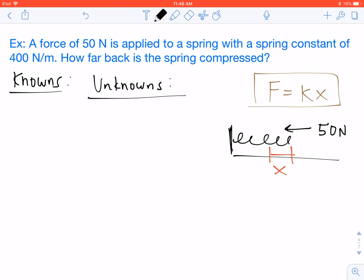In this video lesson, I'm going to teach you how to use the Hooke's Law equation. And so our example problem for today, we have a force of 50 newtons is applied to a spring with a spring constant of 400 newtons per meter.